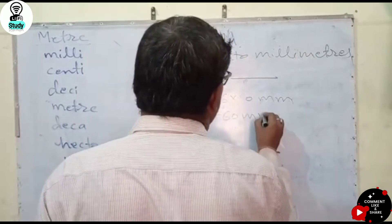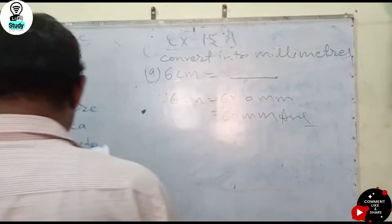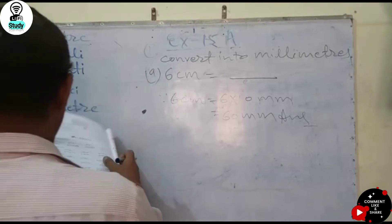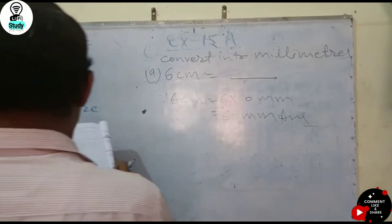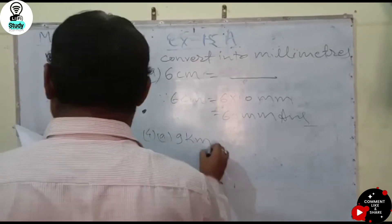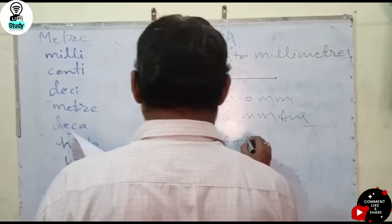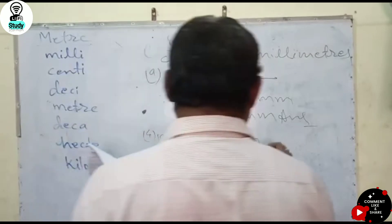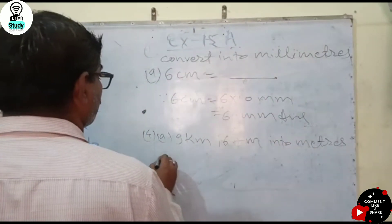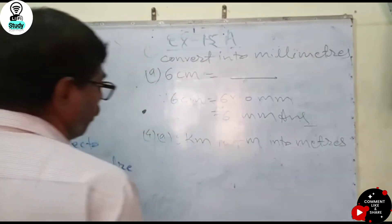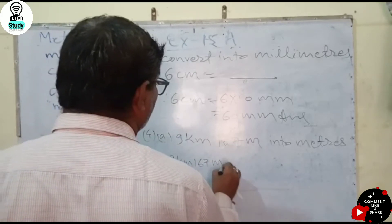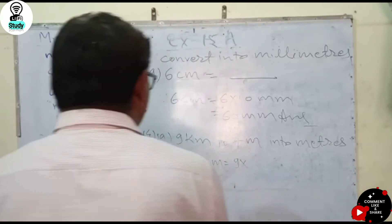The answer is 60 millimeters. Next: 9 kilometers 167 meters — you have to change this into meters, which is a smaller unit.